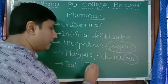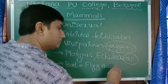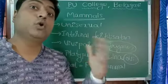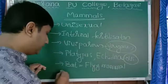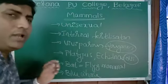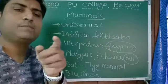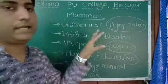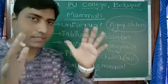The bat is a flying mammal. The largest mammal is the blue whale, found in the ocean. The smallest mammal is the pygmy shrew, which belongs to the rat family and is so small you can keep it on your finger. These are some very important characters of mammals, completing our overview of the animal kingdom. Thank you, students.